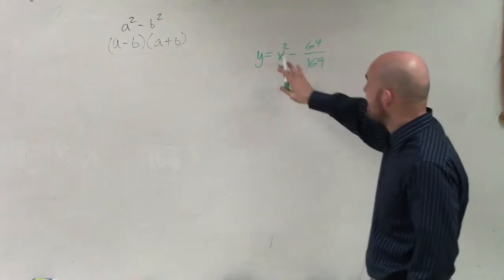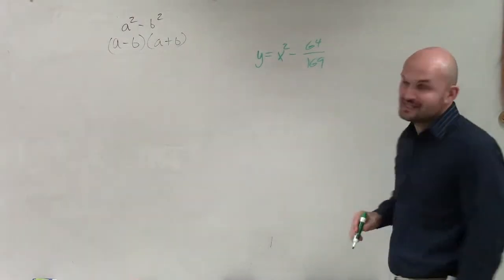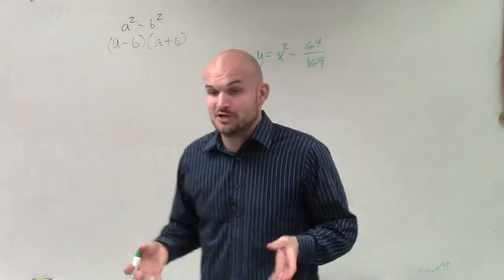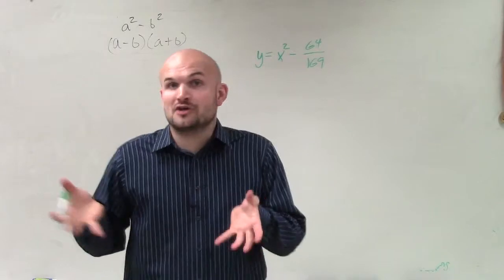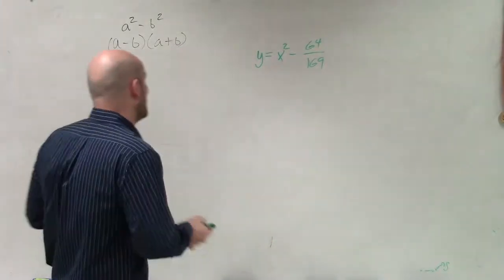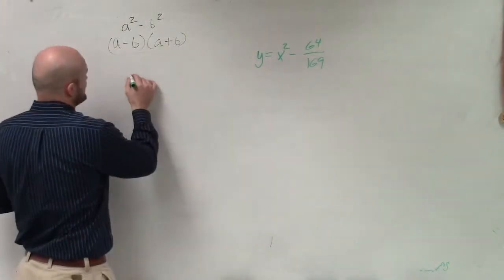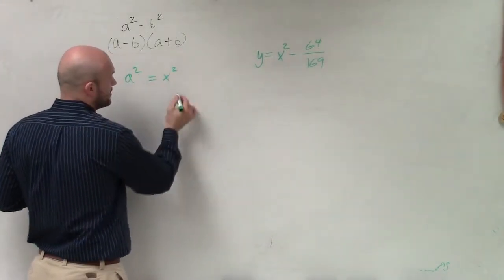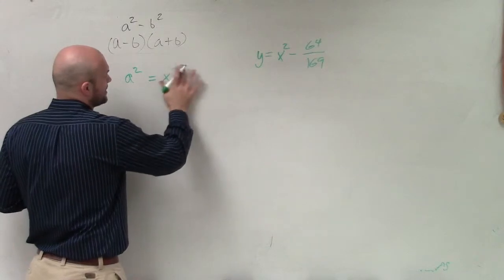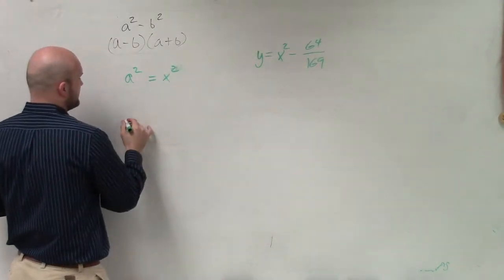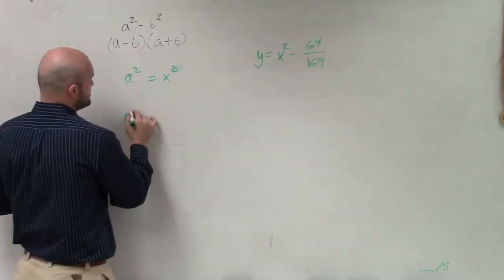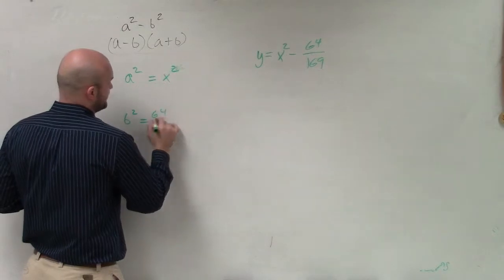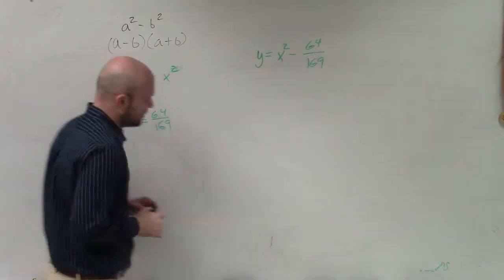So in this case, we have x squared minus 64 over 169. What we need to determine is, what are our squared terms? We have a squared equals x squared, and then we have b squared equals 64 over 169.